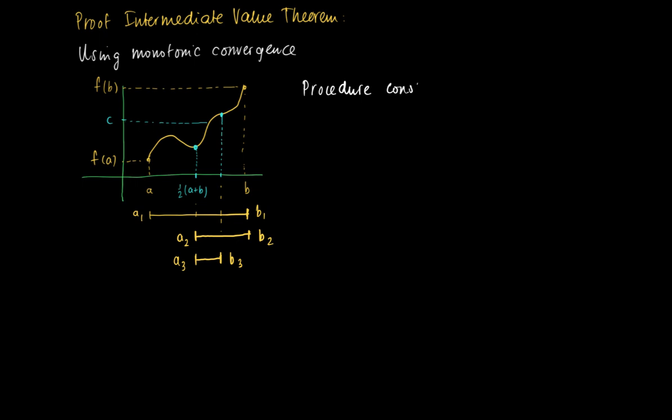So we have the following procedure of constructing intervals, Ak, Bk, where we start with the interval a1b1 is just ab. Now as the first step we start with the interval a1b1 equals ab, and secondly we look at a midpoint x equals a half times a1 plus b1 and compare it with the value c.